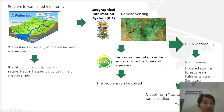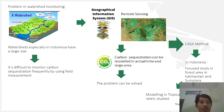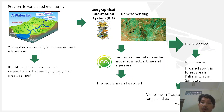Carbon sequestration modeling with integration between remote sensing and GIS can be performed using the CASA method. The CASA method can be used to measure vegetation productivity through photosynthesis, so it can be used to model carbon absorption during the photosynthesis process.